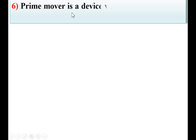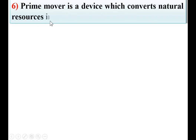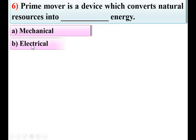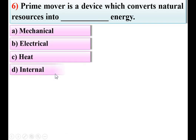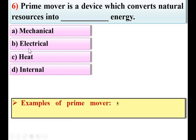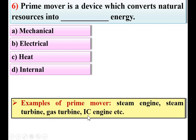Next: a prime mover is a device which converts natural resources into — options: mechanical energy, electrical energy, heat energy, internal energy. Examples of prime movers include steam engines, steam turbines, gas turbines, and IC engines. All of these develop mechanical energy, so a prime mover converts available energy into mechanical energy. A is the right answer.